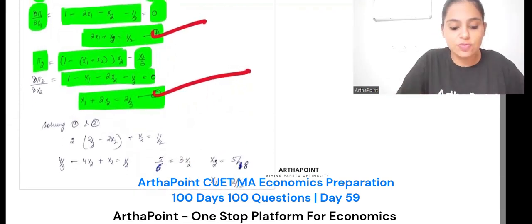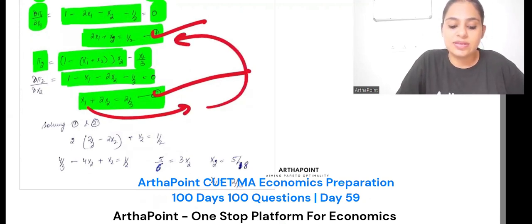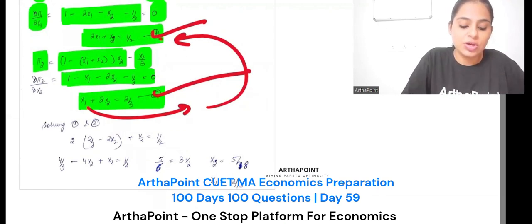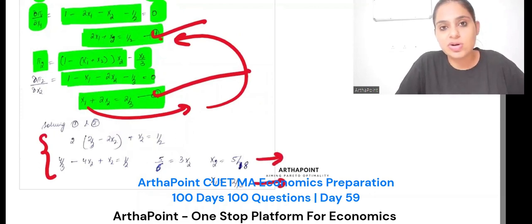Simultaneous - you find the value of x1 from equation 1, put it here, and then solve the answer. So when you solve these two equations simultaneously, you will get the answer as x1 = 2 by 18 and x2 = 5 by 18. So this is your answer.